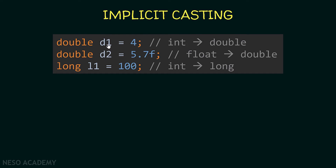Let's look at implicit casting examples. Assigning the value 4 (an integer) to a double variable — Java automatically converts the integer to a double because a double can store an integer without any problem. Similarly, storing a float inside a double is automatically converted, and storing an integer inside a long is also automatically converted because a long can store an integer without any problem.